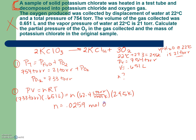The question asks, what is the mass of the potassium chlorate in the original sample? Now it's a stoichiometry problem. So 0.0259 moles of O2. I can go straight to my mole ratio because I'm already in moles. Moles of O2, moles of KClO3.